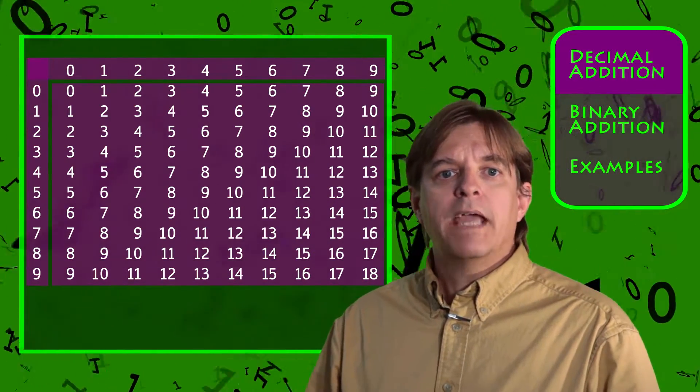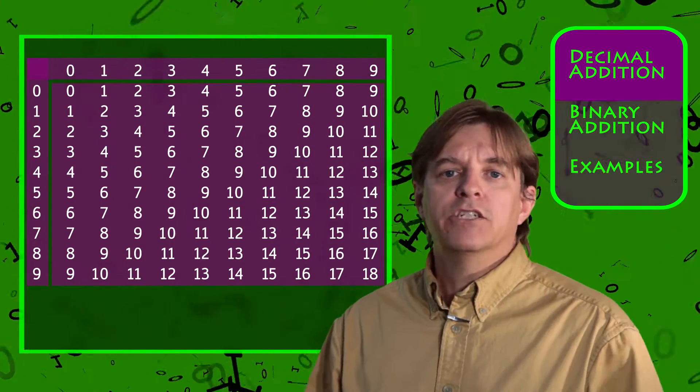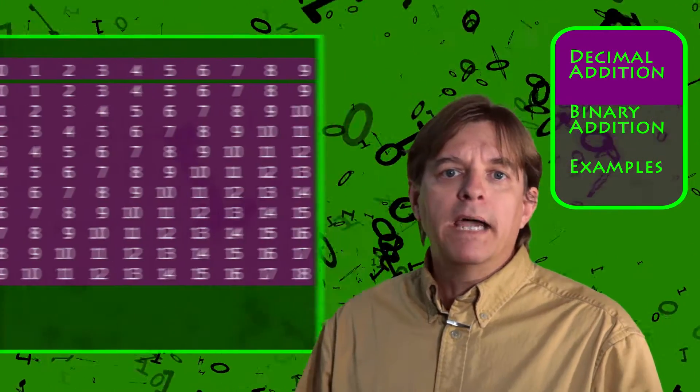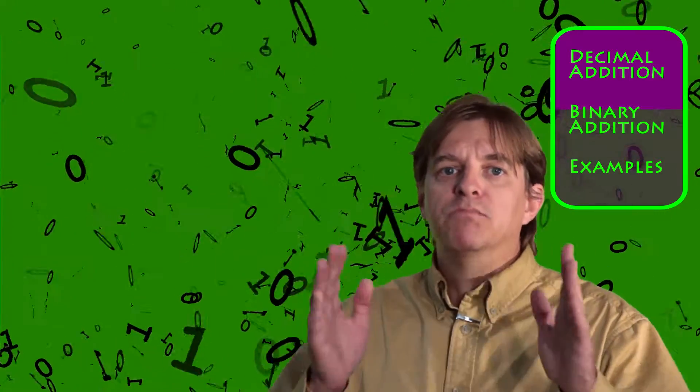Multi-digit numbers can be added by simply thinking of them as multiple single digit combinations. Well, binary has something similar, but much, much smaller.